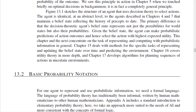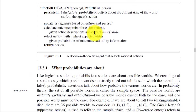The next point is basic probability notation. For an agent to represent and use probability information, we need a formal language — the language of probability theory. This is the function for the decision-theoretic agent: the input is a percept and the return value is an action, selecting rational actions.